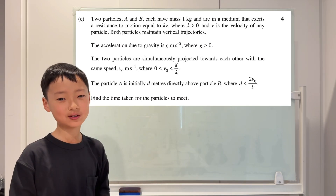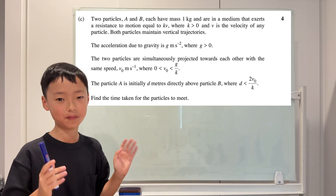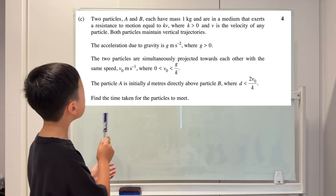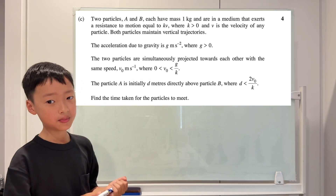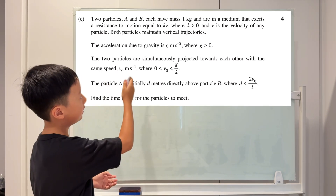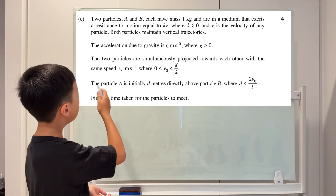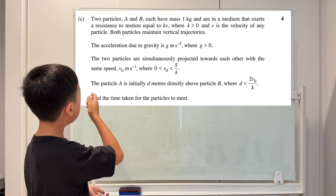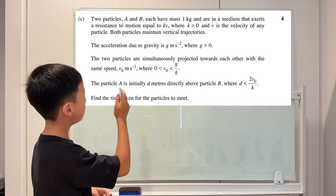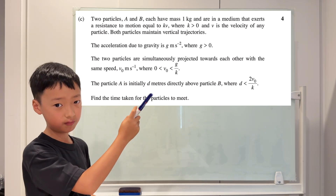Hi guys, today I'm going to explain the last question on the 2024 Maths Extension 2 HSC. The question says that there are two particles, A and B, and they each have mass 1 kg. They are in a medium which has a resistance KV, where K is greater than 0.